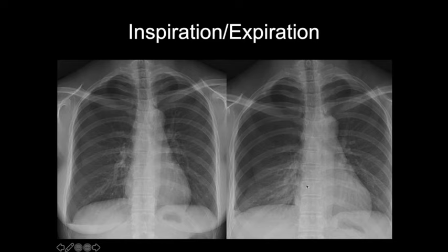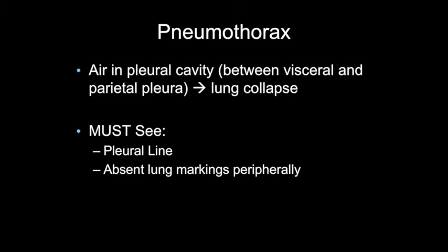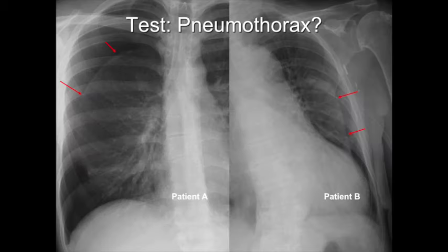On the right side, we have our expiratory views, and the pneumothorax is much more obvious. Again, you have the pleural line and absent lung markings peripheral to it. A pneumothorax is just air in the pleural cavity. To diagnose it, you must see a pleural line and then absent lung markings peripherally. If you follow these two rules, there's really no reason why you can't diagnose pneumothoraces as well as a radiologist.